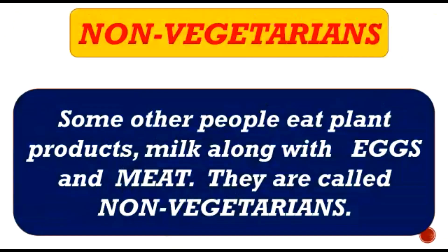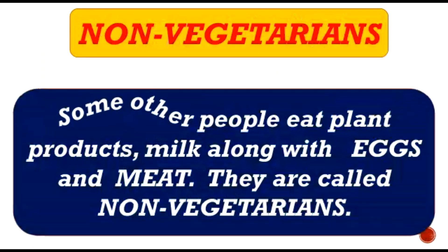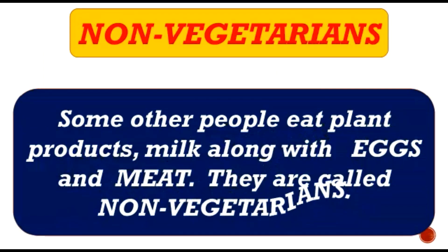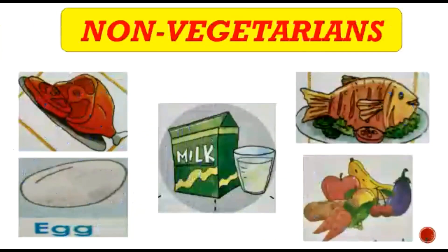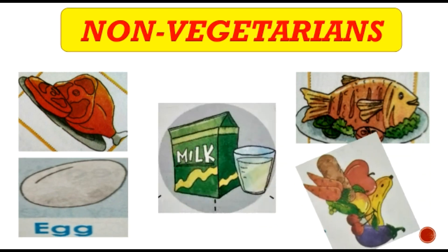Next is non-vegetarian. People who eat plant products, milk products, as well as animal products are called non-vegetarians. Animal products are those we get from animals — like eggs and meat. So non-vegetarians eat meat, fish, egg, milk products, and fruits and vegetables.